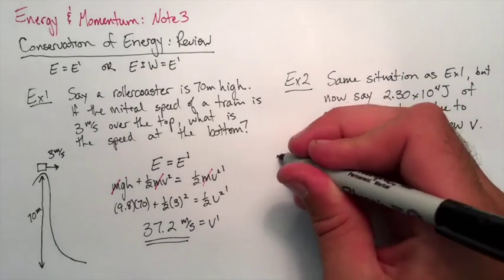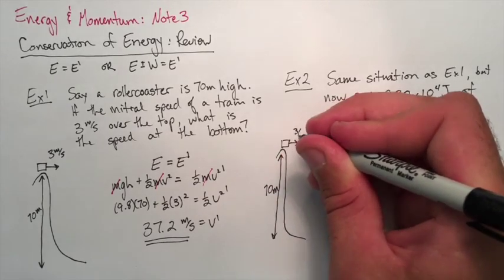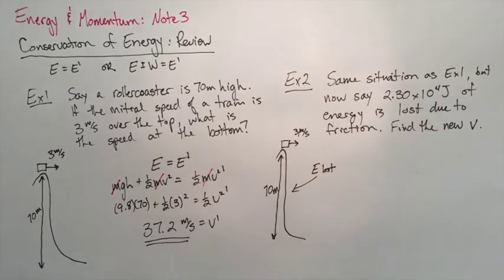Here we should expect if we're losing energy our final answer value should be less than what we got in A. Hopefully we get an answer less than 37.2 meters per second.